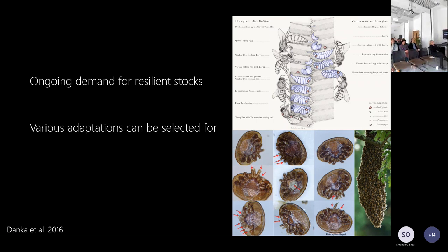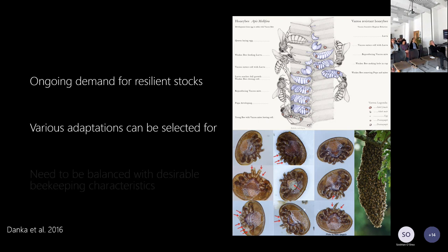Resistant phenotypes come in a number of different forms, some naturally existing and then bred into stocks. Examples include Varroa Sensitive Hygiene, or VSH — where bees are able to detect the Varroa reproducing in the brood cells, remove the infested brood, and thus keep Varroa levels low. There's also a mite-biting phenotype where bees attack the mites and bite their legs off, and factors such as increased swarming frequency which seems to disrupt Varroa reproduction.